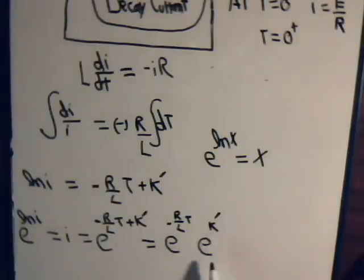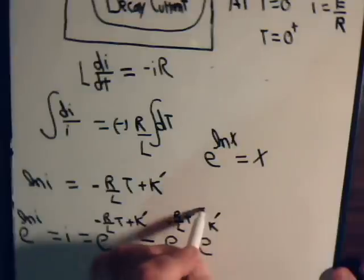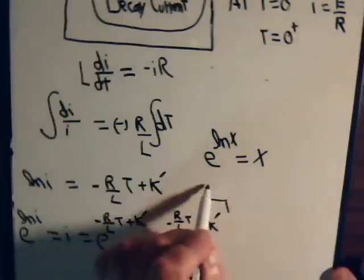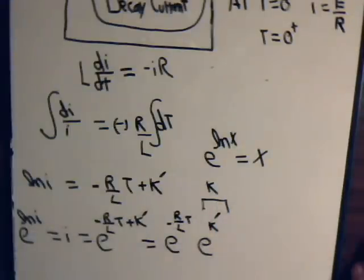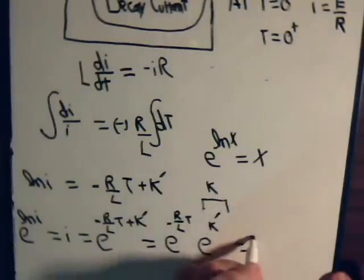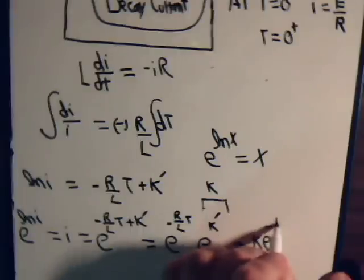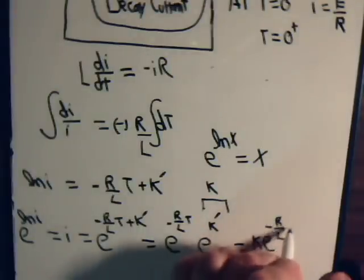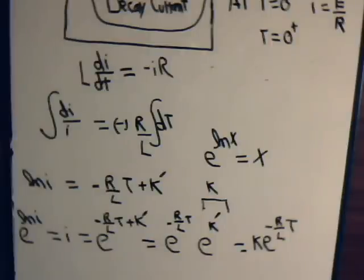This is just a constant, and e is a constant, so we can just call this a new constant, call that k. So this equals k times this. So here we have I equals k e to the minus R over L times t.